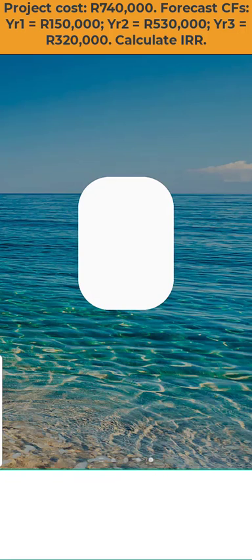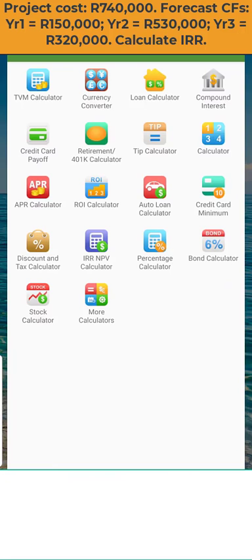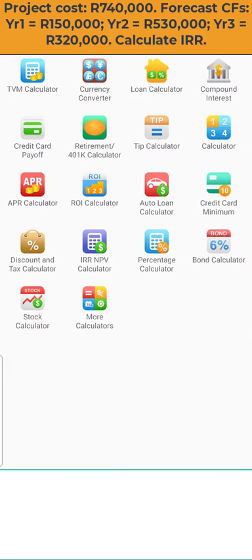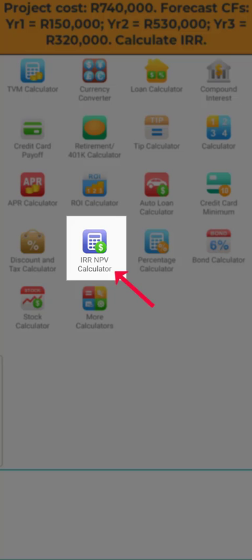Tap through on the app and on the next screen select the NPV/IRR functionality. This may be different from what you have seen before where you have done present value calculations and future value calculations using the TVM functionality.